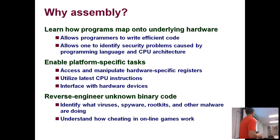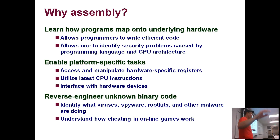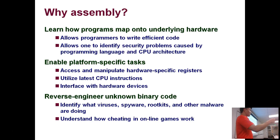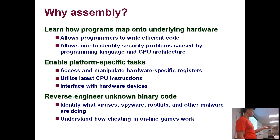Another reason to use assembly — not security related — is to enable platform-specific tasks. Intel updates its CPU processor line every year or two, and typically each update adds a whole slew of new instructions to accelerate the most commonly used features. For example, since everything was doing AES encryption, they created a single instruction that does an AES round. To leverage that new instruction you typically need to hand-code assembly initially, because compilers are very slow to update for new processor instructions.